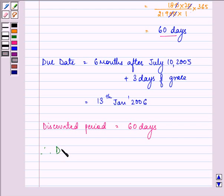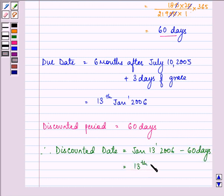Therefore, the discounted date is equal to 60 days less than Jan 13, 2006 minus 60 days. That is further equal to 13th November 2005.